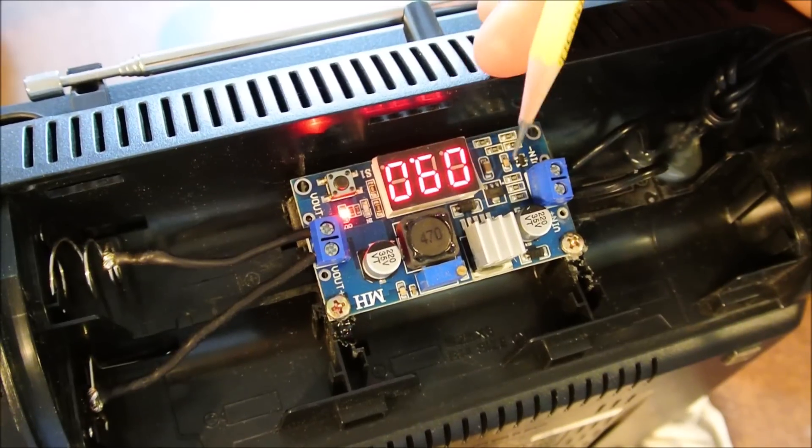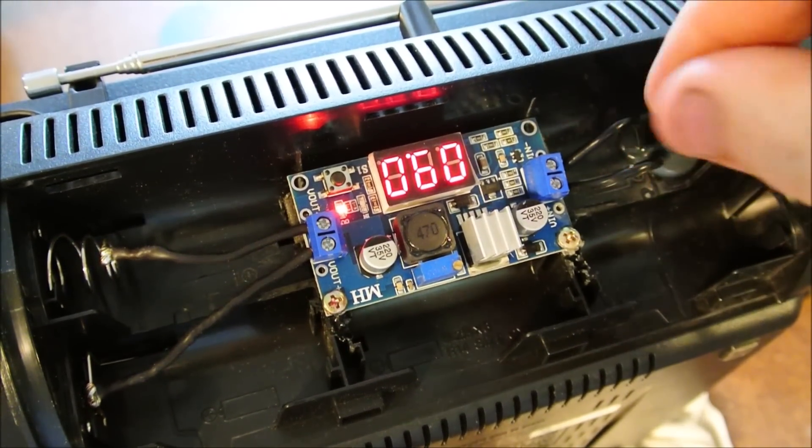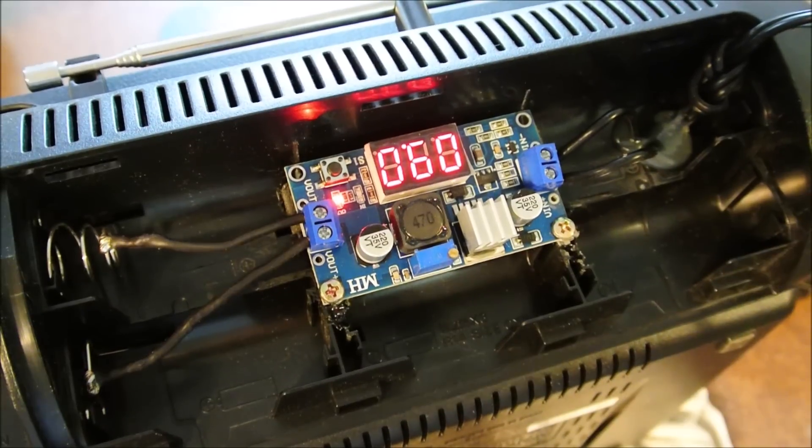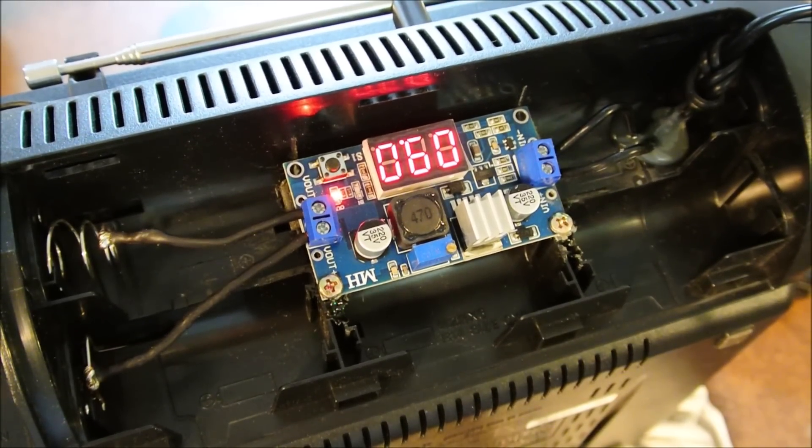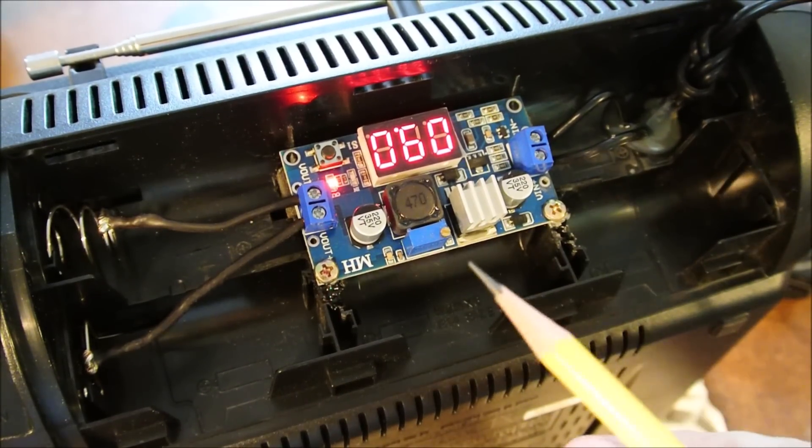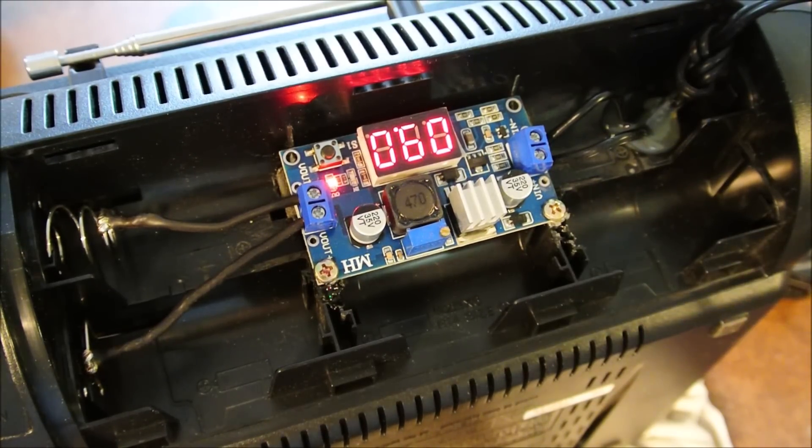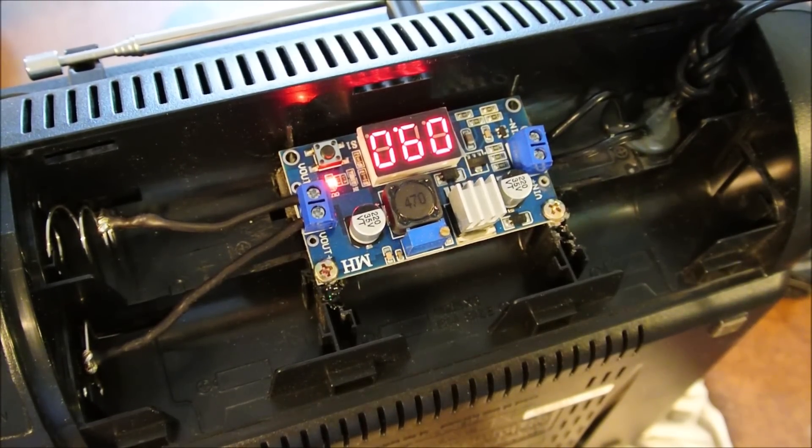There's a little adjustment screw right here, a little teeny tiny thing. And you can twist it until you adjust the voltage to what you want it to be. Now just so that I didn't mess anything up, I attached the outside to an LED light bulb while I was playing with it, until I got the voltage right.